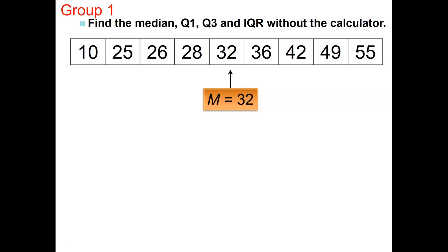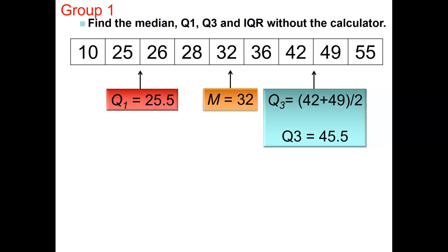Quartile 1 is the middle of the first half — the middle of 10, 25, 26, and 28. Since there is no technical middle, it's the average of 25 and 26, so 25.5. Then the middle of the upper half is in between 42 and 49, so quartile 3 is (42 + 49) / 2, or 45.5.